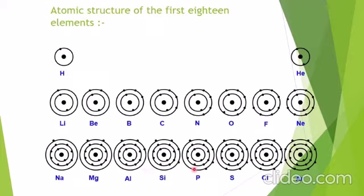Sulfur has configuration 2,8,6. Chlorine is 2,8,7. And argon is 2,8,8. In this way, electrons are filled in different shells — the K, L, M, and N shells. These diagrams show the nuclear structure and distribution of electrons for each element.